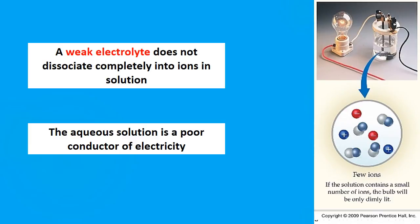A weak electrolyte does not dissociate completely — it only dissociates to a certain extent. These are the slightly soluble substances or slightly soluble ionic compounds. They create few ions. Notice we have two positive and two negative charged particles, but four compounds still remain. Because it does not dissociate completely, it will conduct electricity but is a poor conductor. It can conduct due to the presence of some ions, but since there are so few, it is not a good conductor.